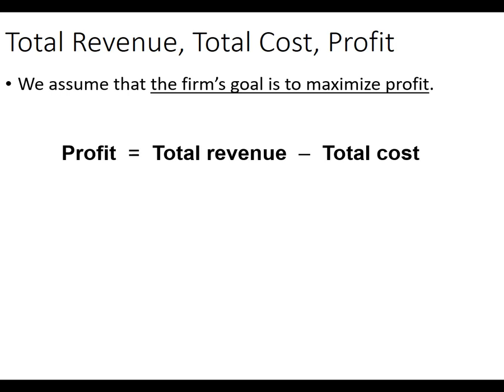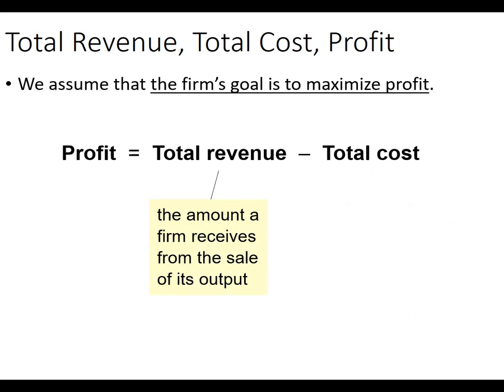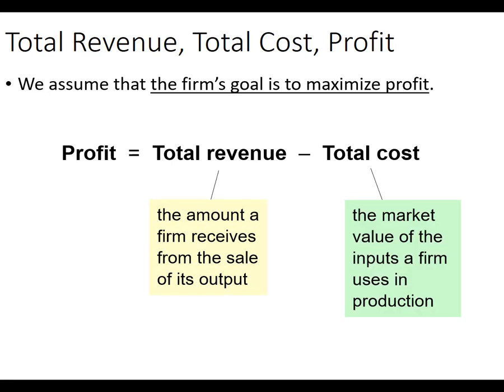We'll abbreviate total revenue as TR and total cost as TC. Total revenue is just the amount the firm receives from sales. Think about the Arizona Wildcats — they put on a football game, they take the number of tickets sold, multiply by ticket prices, and that's total revenue. Then they estimate total cost of putting on the game.